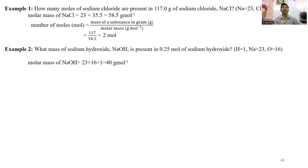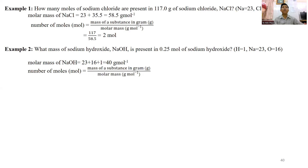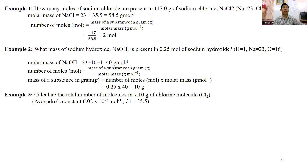In example 3, find the number of molecules in 7.1 grams of chlorine molecules. Chlorine molecules, Cl₂, have a molar mass of 71 grams per mole. Use the moles formula to calculate, then multiply by Avogadro's constant to find the number of molecules.